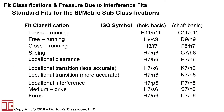For reference, these are the standard fits for the SI metric system. The five clearance fits are: loose, free-running, close-running, sliding, and locational clearance. Then there are two transitional fits: locational transition less accurate and locational transition more accurate. The three interference fits are: locational interference, medium drive, and force.